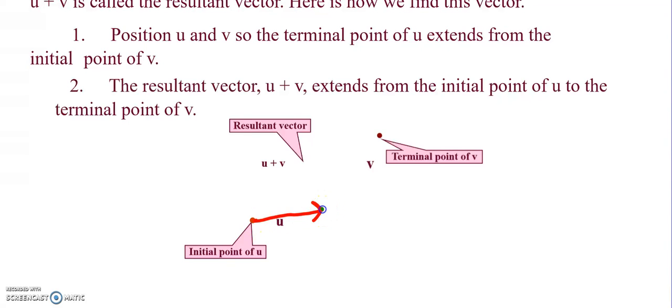And then here is going to be the vector v. So the initial point of v is at the terminal point of u. And then here is the terminal point of v.